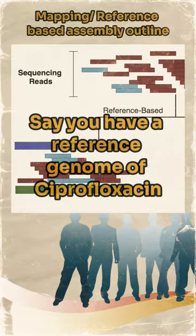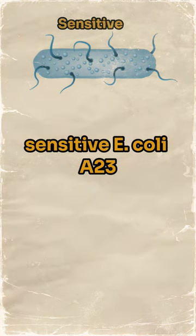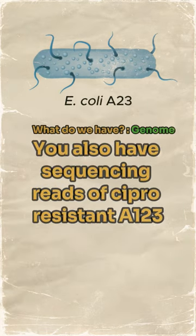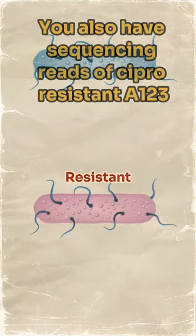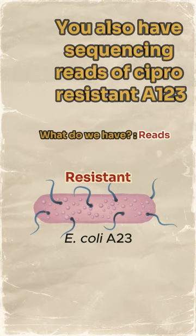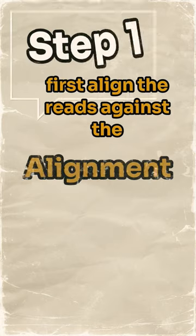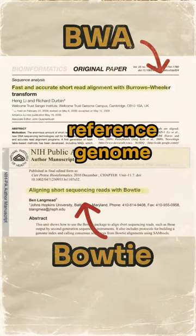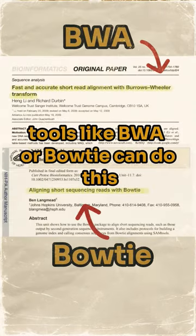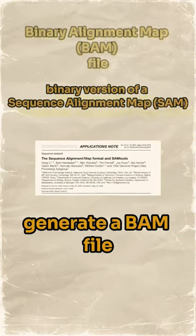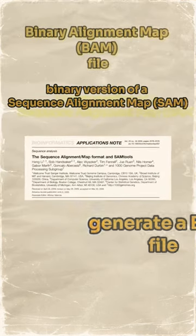Say you have a reference genome of Cipro-sensitive E. coli A23. You also have sequencing reads of Cipro-resistant A23. First, align the reads against the reference genome. Tools like BWA or Bowtie can do this. These tools will generate a BAM file.